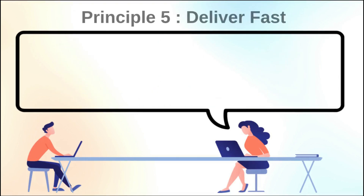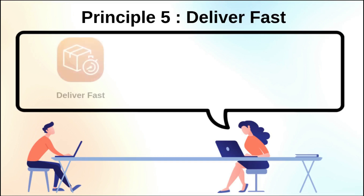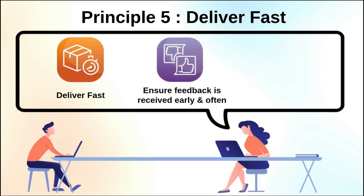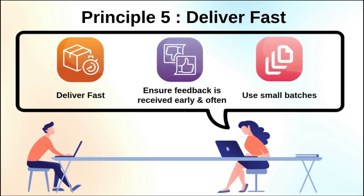The fifth principle is deliver fast. The idea of delivering fast is really to ensure that feedback is received early and often, to allow course corrections in development. And if you use smaller batches, you should be able to deliver faster, which will allow you to gather feedback at an increasing rate.